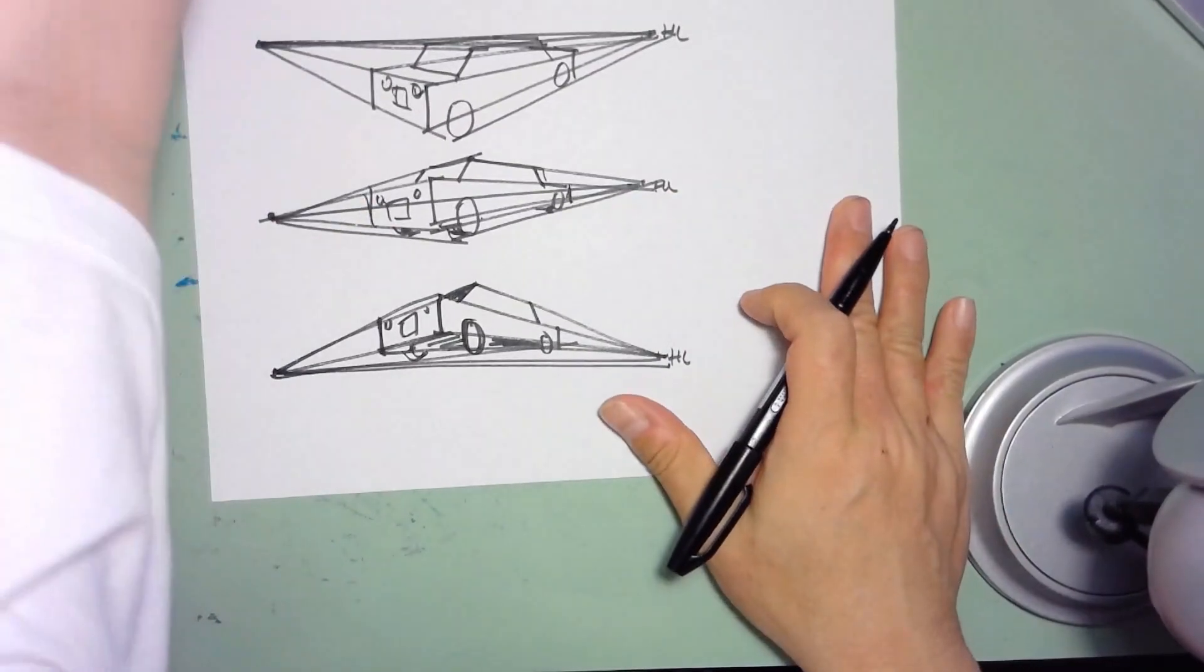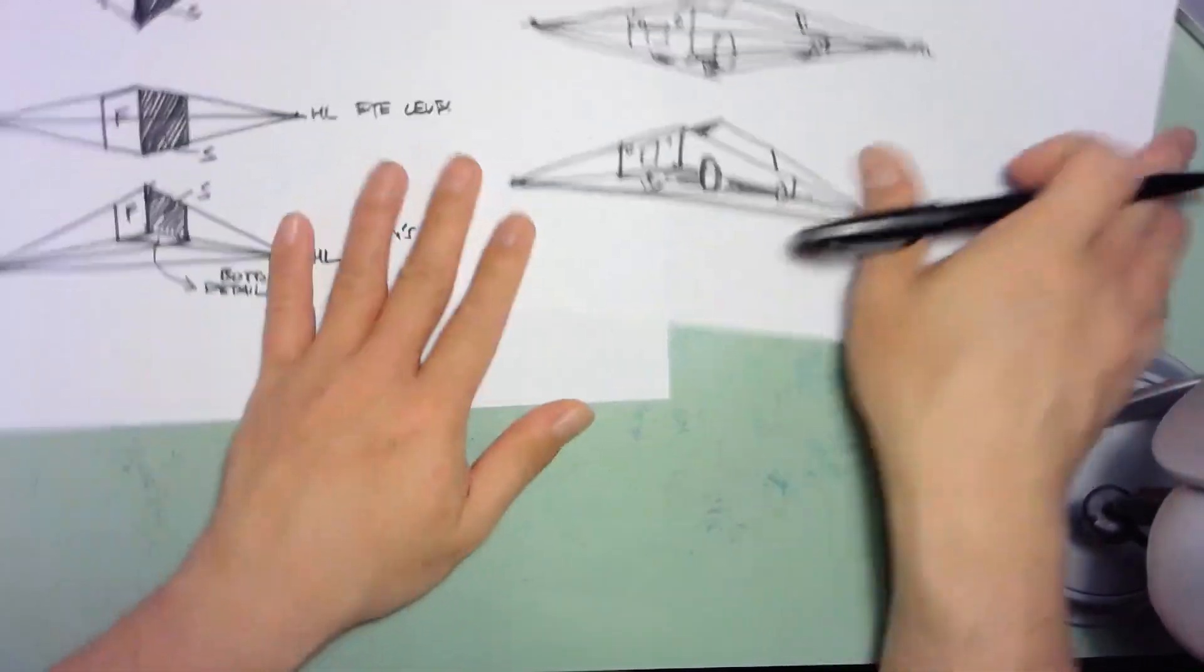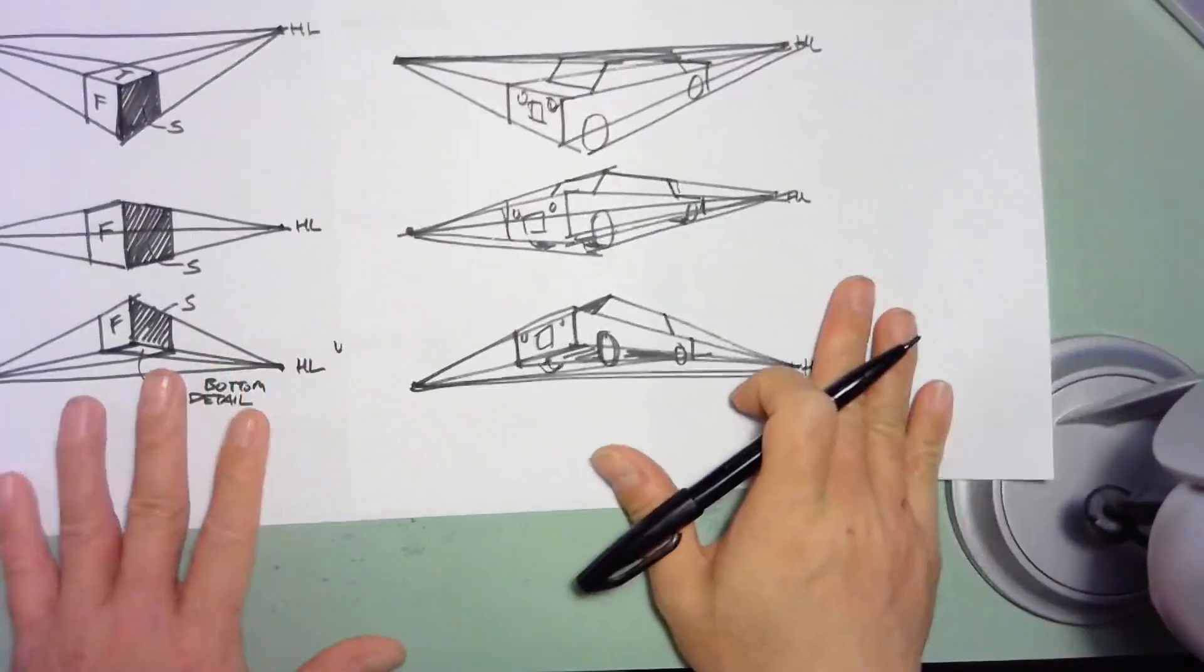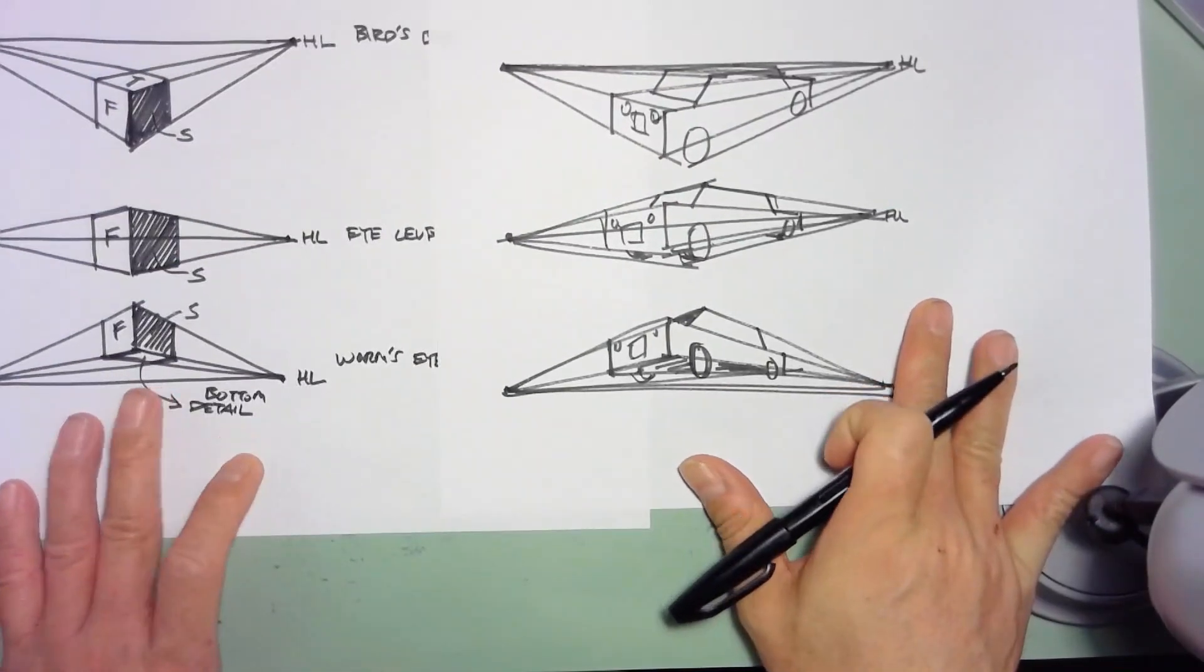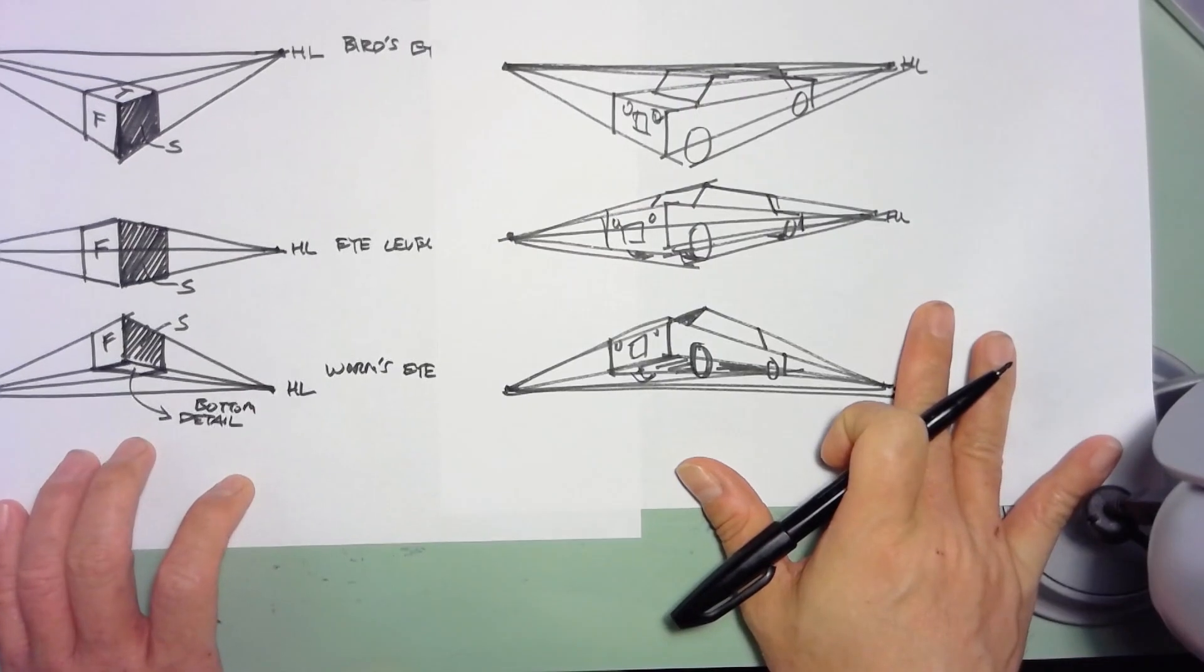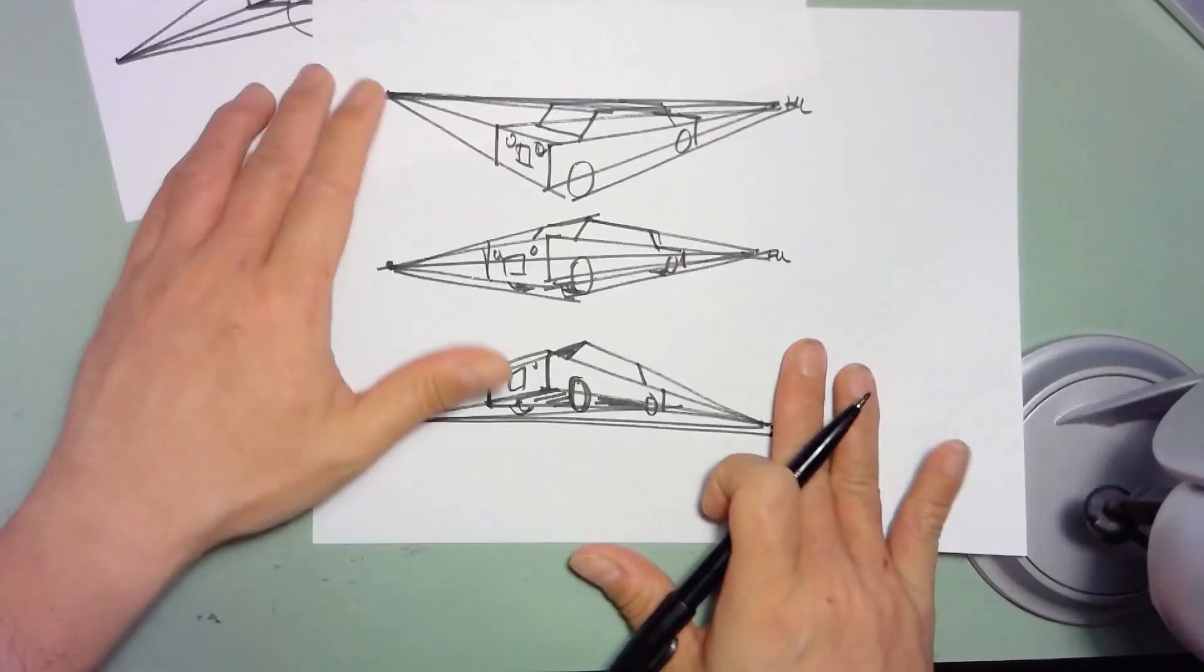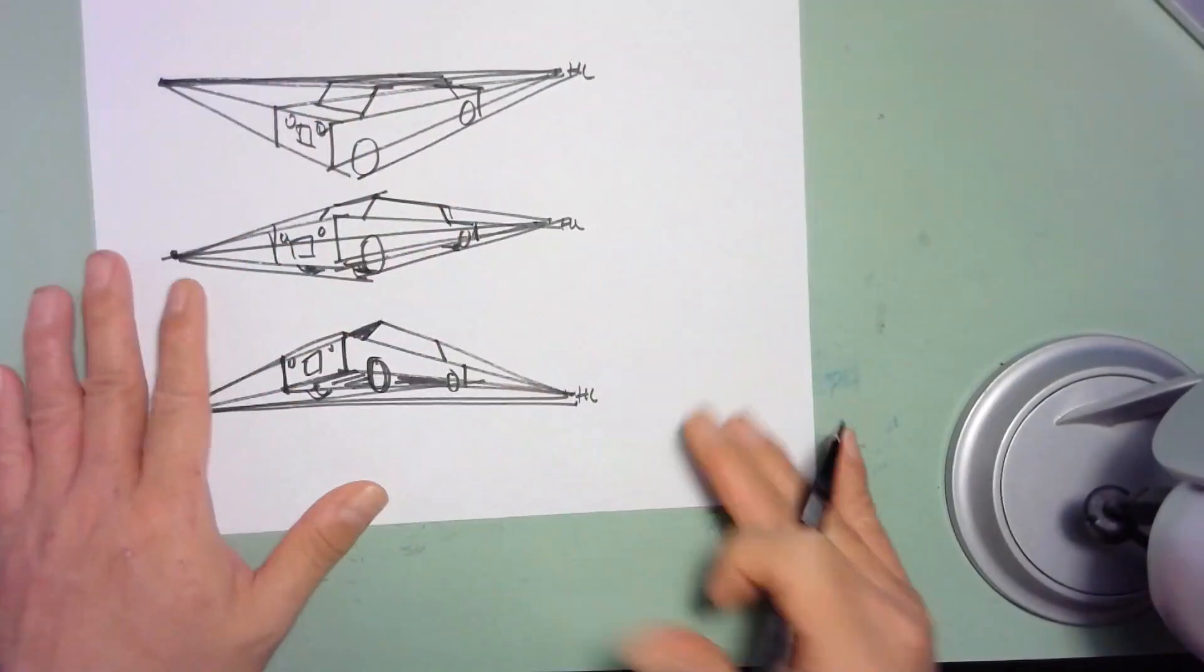So there we have it. We have our bird's-eye view, our eye level view, and we have our worm's-eye view, all right? So those are the three types of viewing angles you can view at.